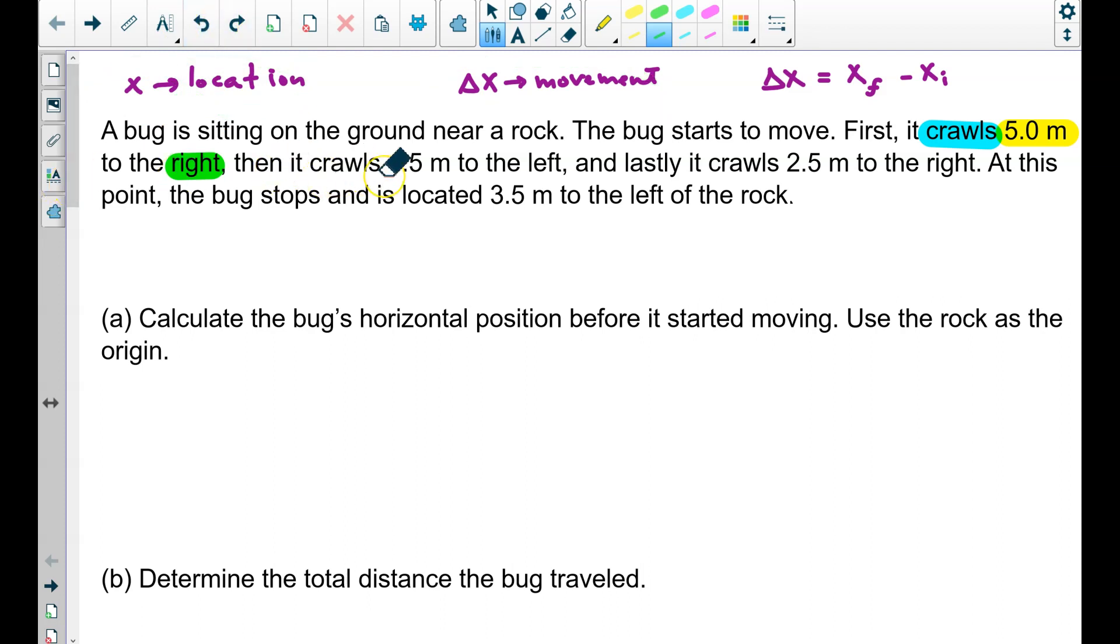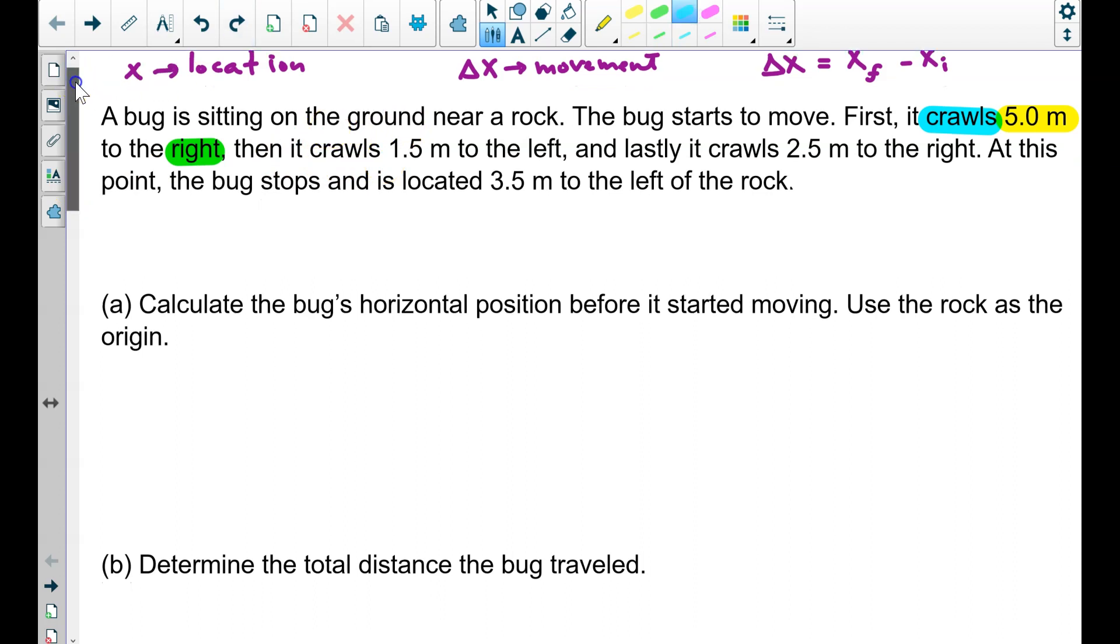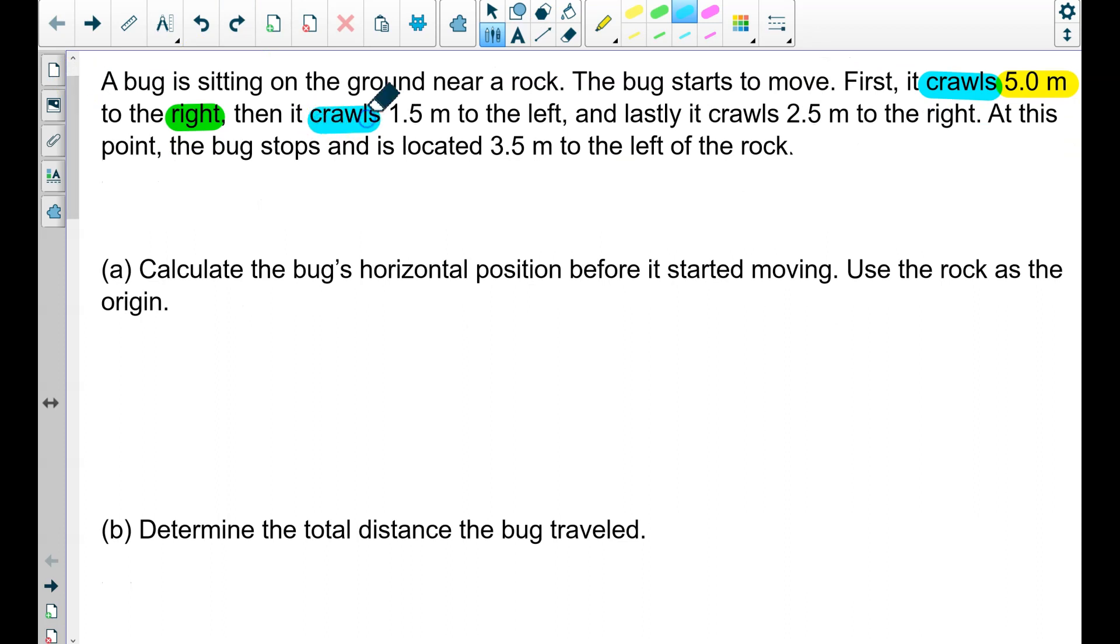Then the bug crawls 1.5 meters to the left. We know left means negative. Lastly, it crawls once more, 2.5 meters to the right. At this point, the bug stops and is located. That's a different word than crawl. It is located 3.5 meters to the left of the rock.